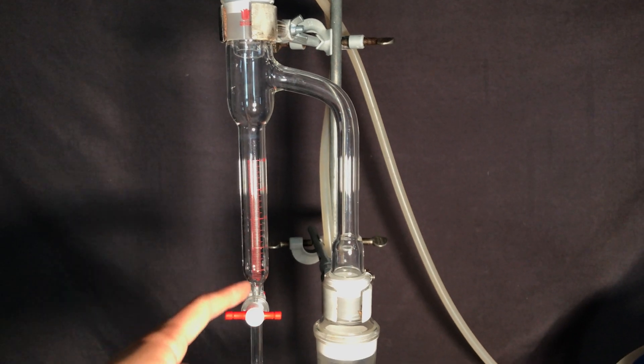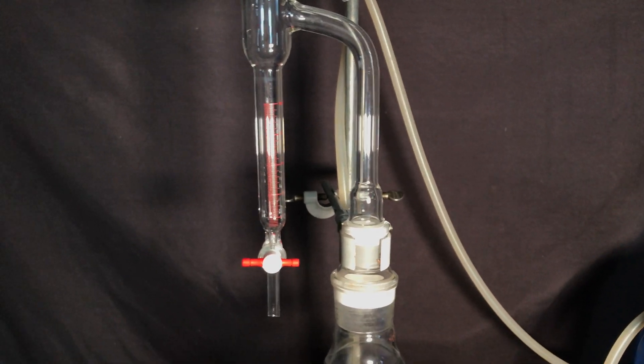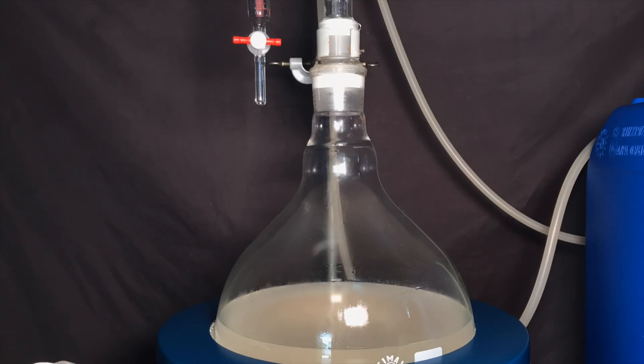A Dean-Stark trap is a simple piece of equipment. Water and solvent come over and the water doesn't dissolve very well in the benzene and continues to settle on the bottom. It can then be drained off.